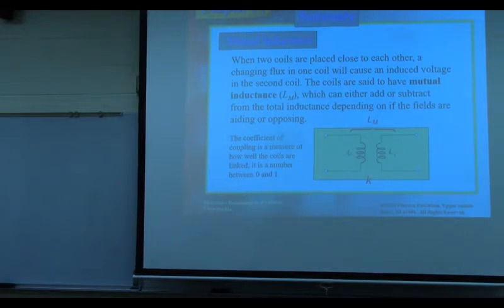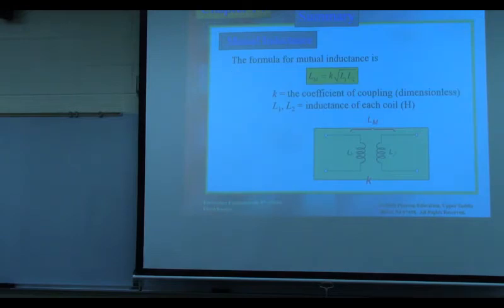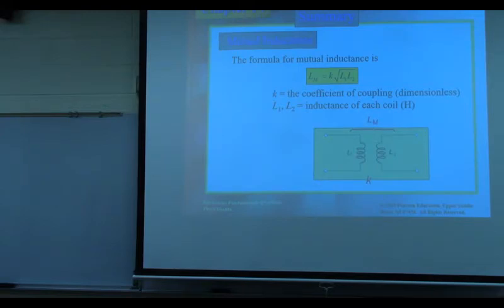The coefficient of coupling describes how well the coils are linked. It is numbered between 0 and 1. If the coefficient equals 1, that means complete coupling. If it equals 0, that means no coupling. In practice, this coefficient will be between 0 and 1, and we want it to be as close to 1 as possible. The mutual inductance Lm is calculated as K times the square root of L1 times L2, where K is the coefficient of coupling.